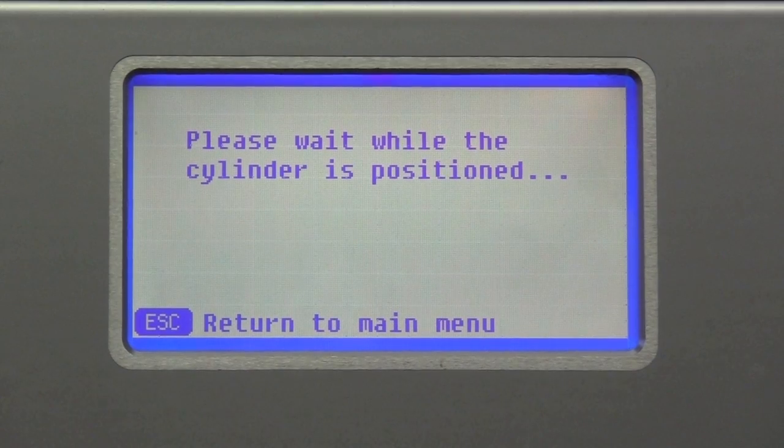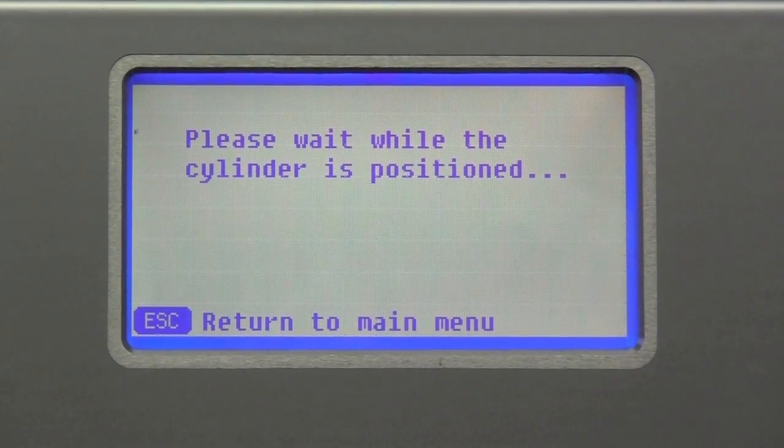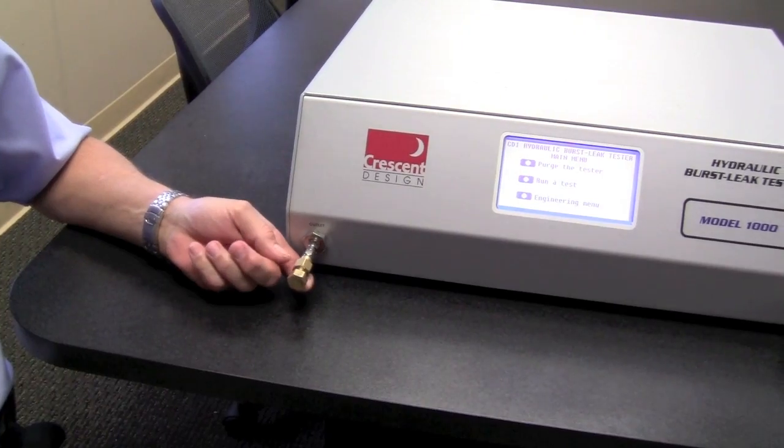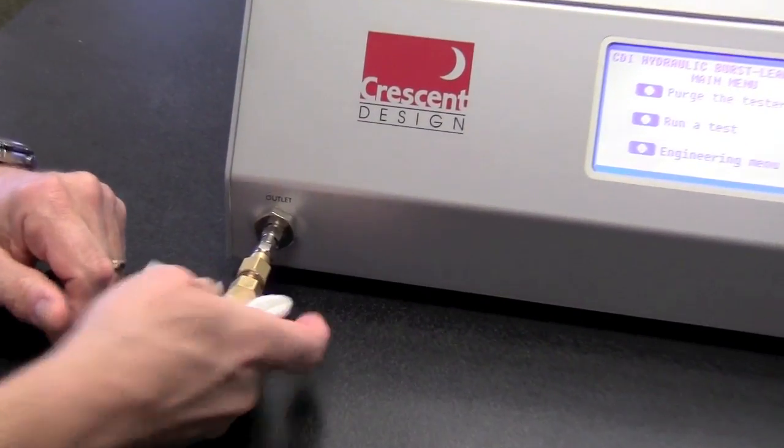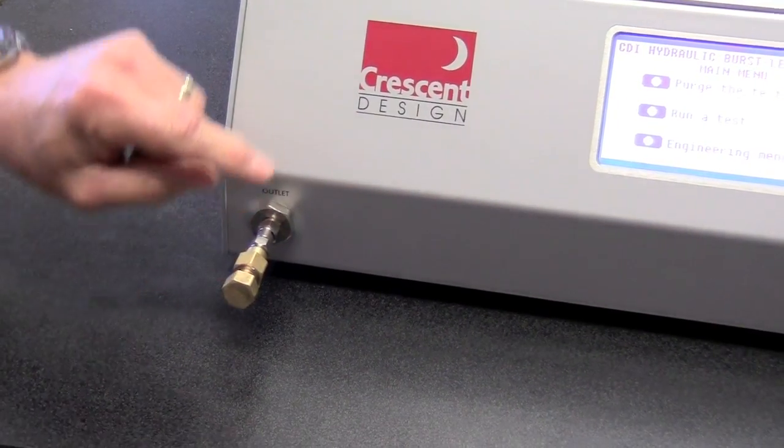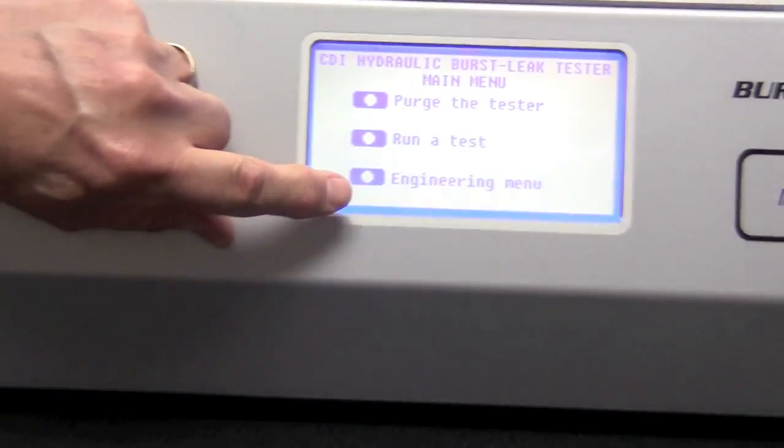So now we're going to reset the machine and do a leak test. Now I'm going to create a leak test and I'm going to use some common brass fittings to simulate a leak that haven't been completely tightened. So to detect a leak, we need to create a test.